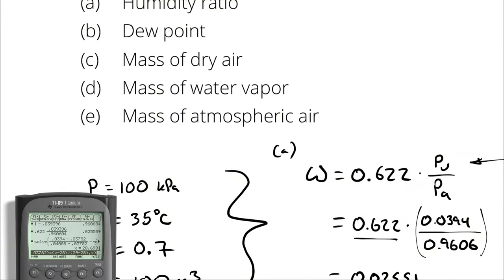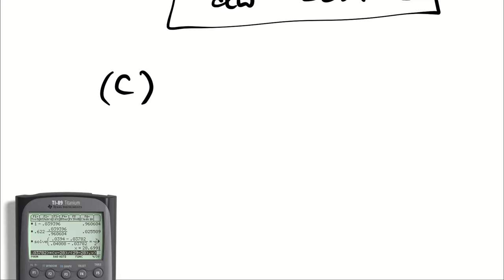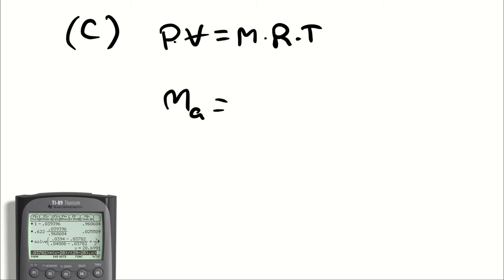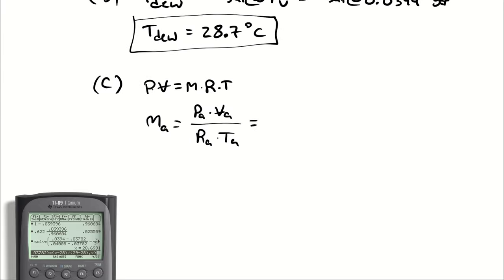Part C: I want to know the mass of dry air in the atmospheric air. We are treating each of the species in the mixture as an ideal gas, so I can use the ideal gas law. Pa is the partial pressure of dry air, Va is the volume experienced by the dry air — the same as the rest of the volumes because of Dalton's law. Ra is the specific gas constant for dry air, and Ta is the dry bulb temperature.